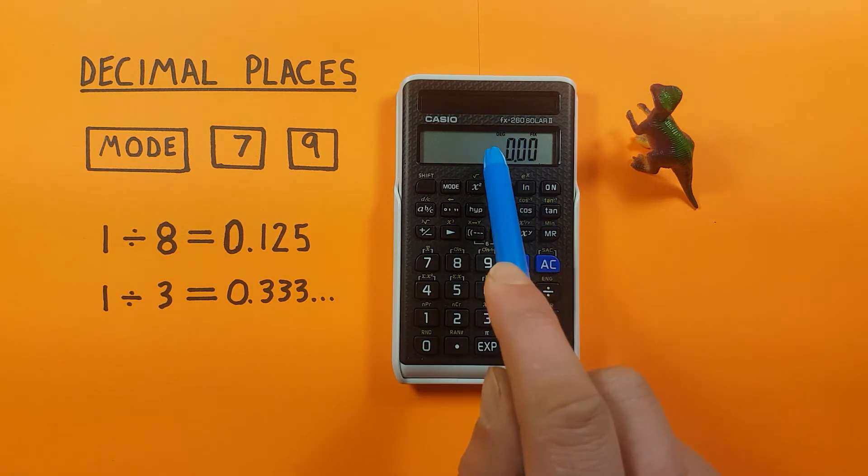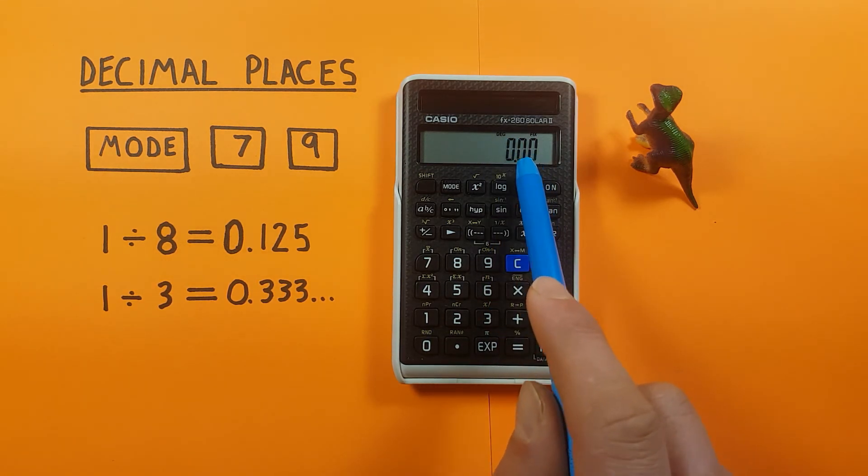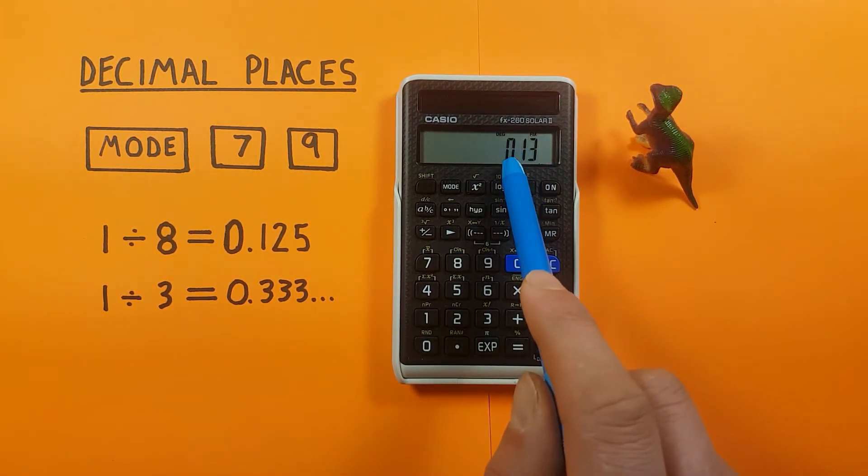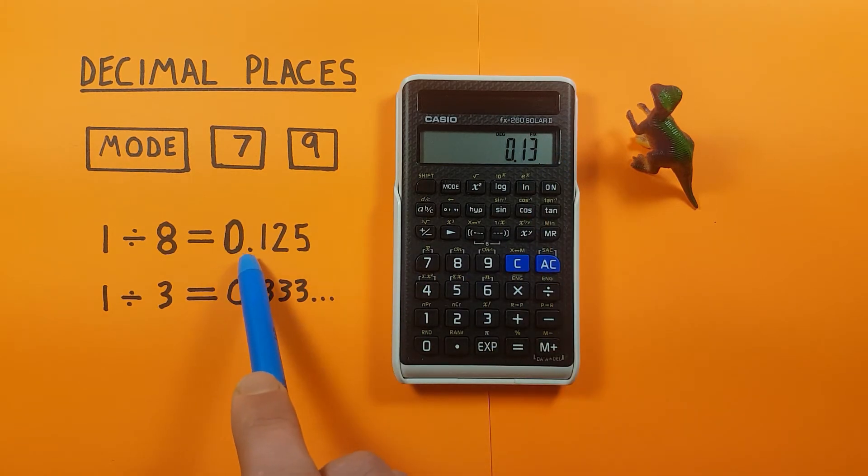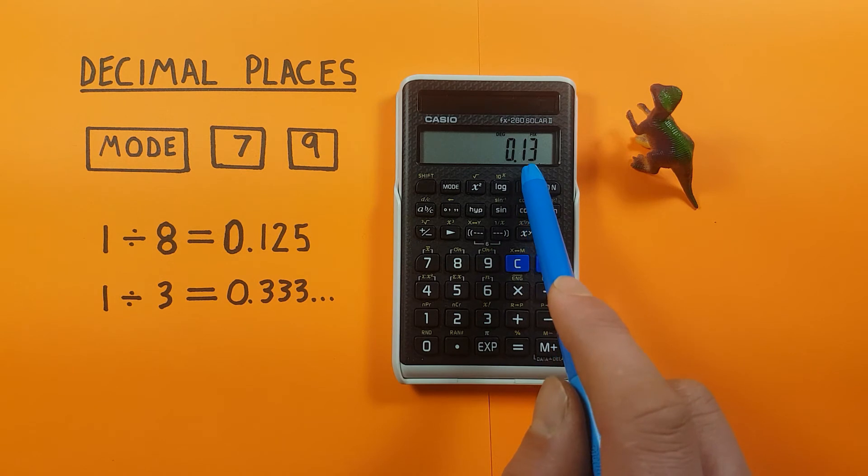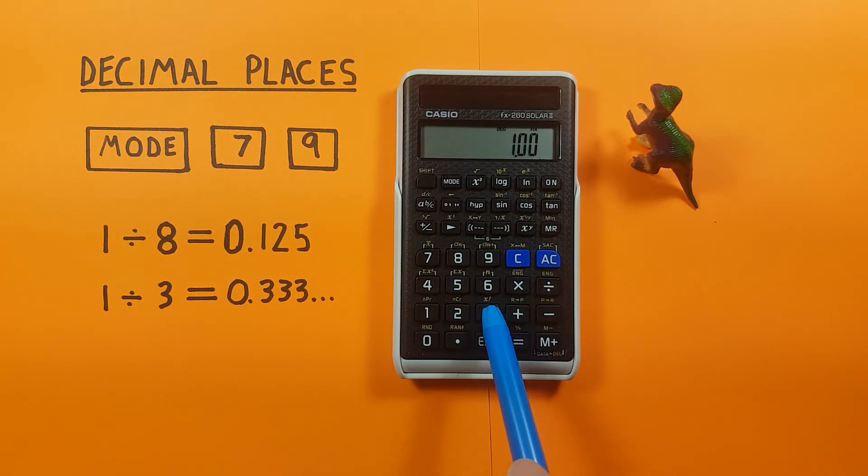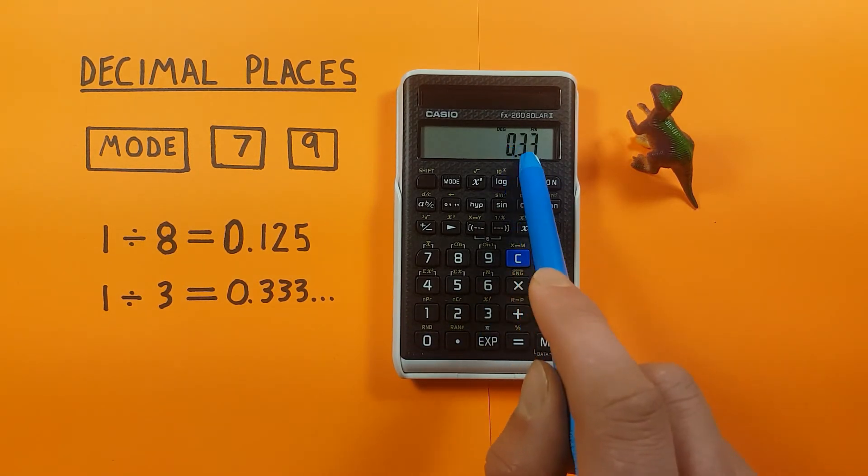Now what this will do is round our answer to fit into two decimal places. So if we do the 1 divided by 8 again you can see we get 0.13 rather than 0.125 because this answer has been rounded up so we're getting that 0.13 now. And again if we do 1 divided by 3 we get a rounded result but this one doesn't round up so we stay at 0.33.